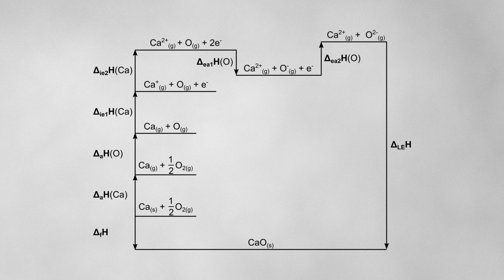And there are two electron affinities for oxygen, because it needs to gain two electrons when becoming O²⁻. Remember that the first electron affinity is always exothermic, because you're forming an attractive force between the incoming electron and the positively charged nucleus of the atom. The second electron affinity is always endothermic, because it requires energy to push another negatively charged electron onto a negatively charged ion, since they repel each other.